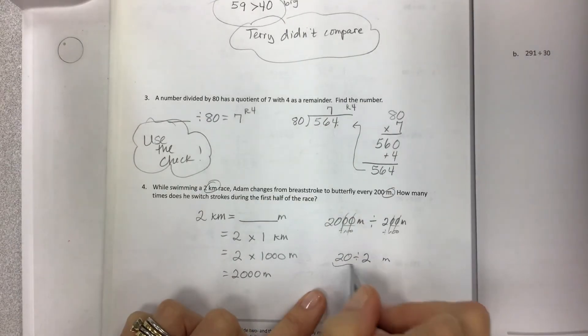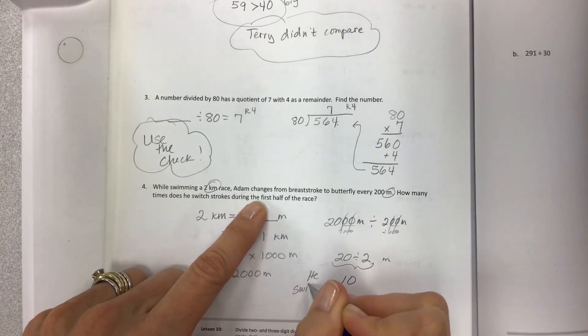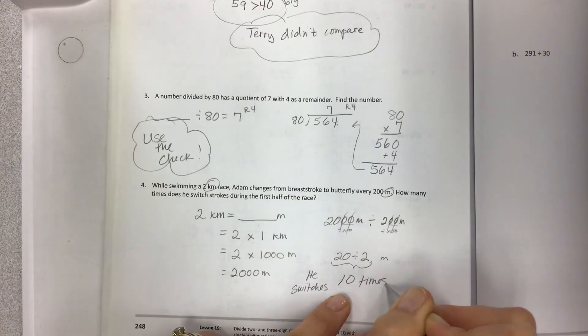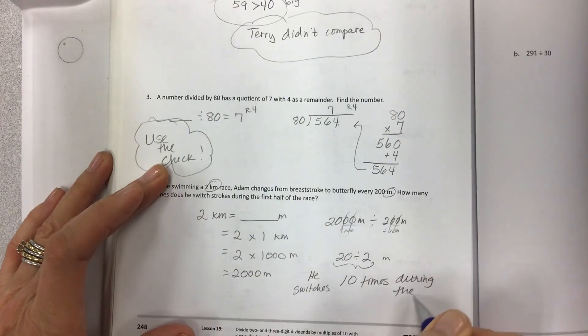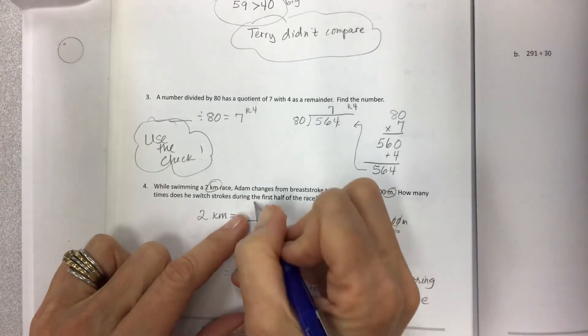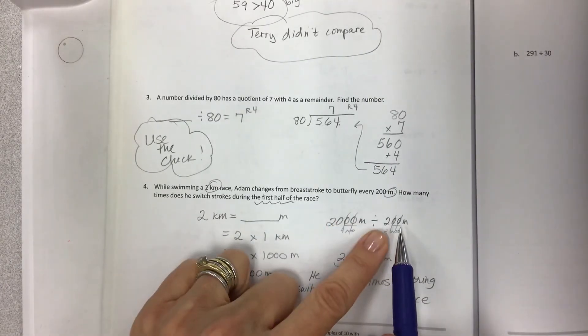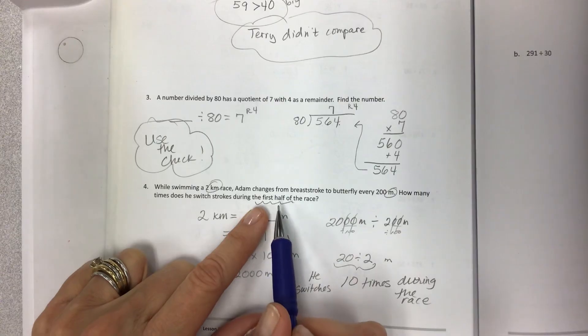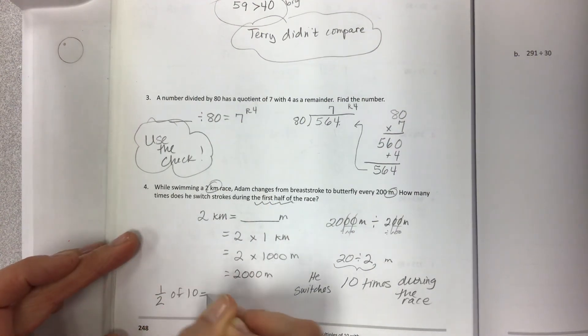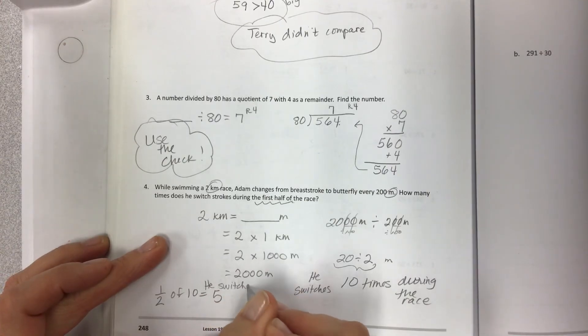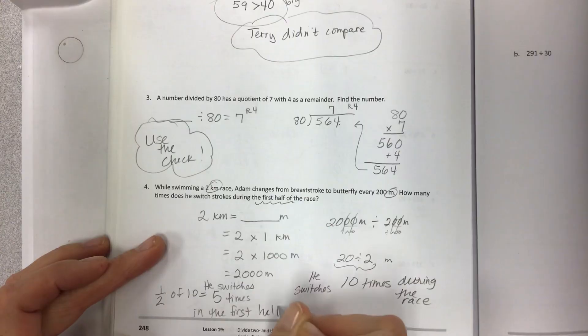And that's all the meters. So then 20 divided by 2 is 10. And so how many times does he switch strokes? He switches 10 times. In what? During the race. But what is the question asking? Oh, the first half. So if this is the whole race, the 2,000 meters divided by 200 meters switching every time, watch out for this last part. How many times does he switch strokes during the first half? So you're basically just going to take half of 10 equals five. So he switches five times in the first half. There you go. There you have it.